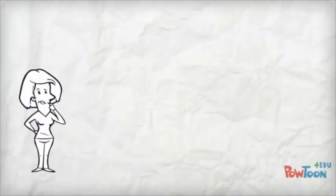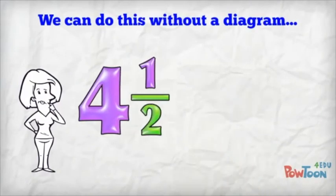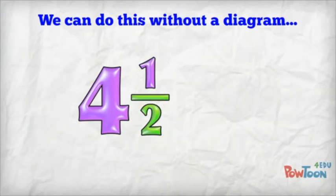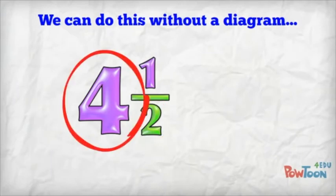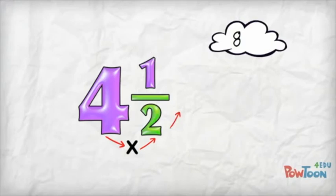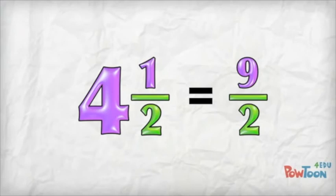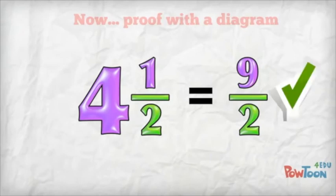We can also do this work without using a diagram. Let's take another example: four and a half. Each whole is worth two because our denominator is two. I have four wholes, so that means I have four lots of two — four times two is eight — and I have another part to add in from the numerator of one, so eight plus one is nine. That's our number of parts, so that's our numerator. I use the same denominator we started with — two — and I'm done. Four and a half is the same as nine over two.